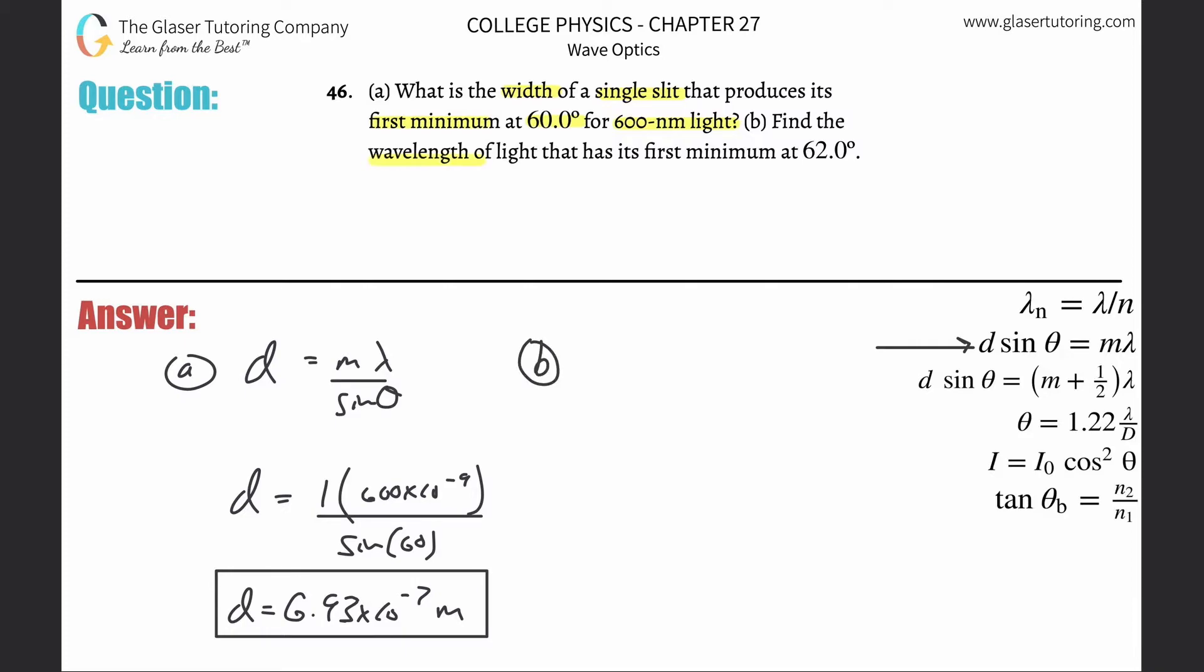Part B: Find the wavelength of light that has its first minimum at 62 degrees. So now we have to find the wavelength. We're going to go back to the original formula: d sine theta equals m lambda. I want to solve for lambda this time, so simply divide the m over and now this is what we need to know.